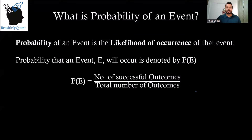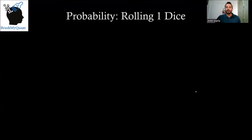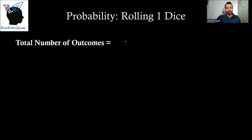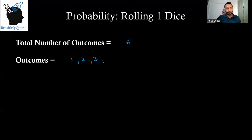Now let's understand this by taking an example. If we are talking about probability of rolling one dice, the total number of outcomes will be six. If we list those outcomes, they will be one, two, three, four, five, or six.